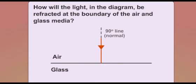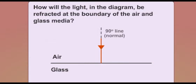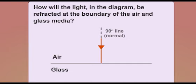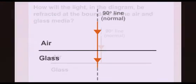How will the light in the diagram be refracted at the boundary of the air and glass media? When the light ray is parallel to the normal, the light ray will not be refracted.